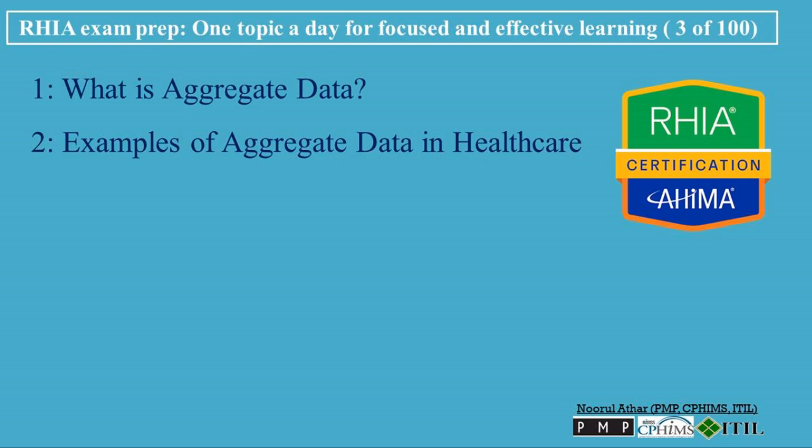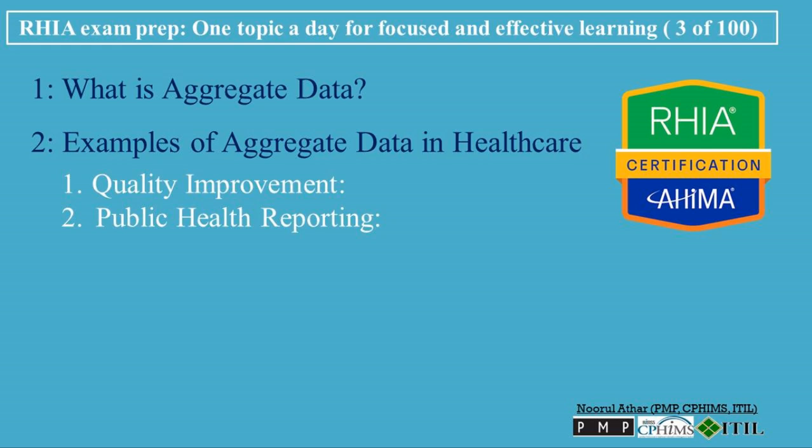Aggregate data is used in numerous ways within healthcare. First, Quality Improvement: hospitals often use aggregate data to track the quality of care they provide — compiling data on patient readmissions, infection rates, or surgical outcomes to identify areas where improvements are needed. Second, Public Health Reporting: public health agencies use aggregate data to monitor the spread of diseases such as influenza or COVID-19, tracking infection rates, identifying hotspots, and developing strategies to control outbreaks.